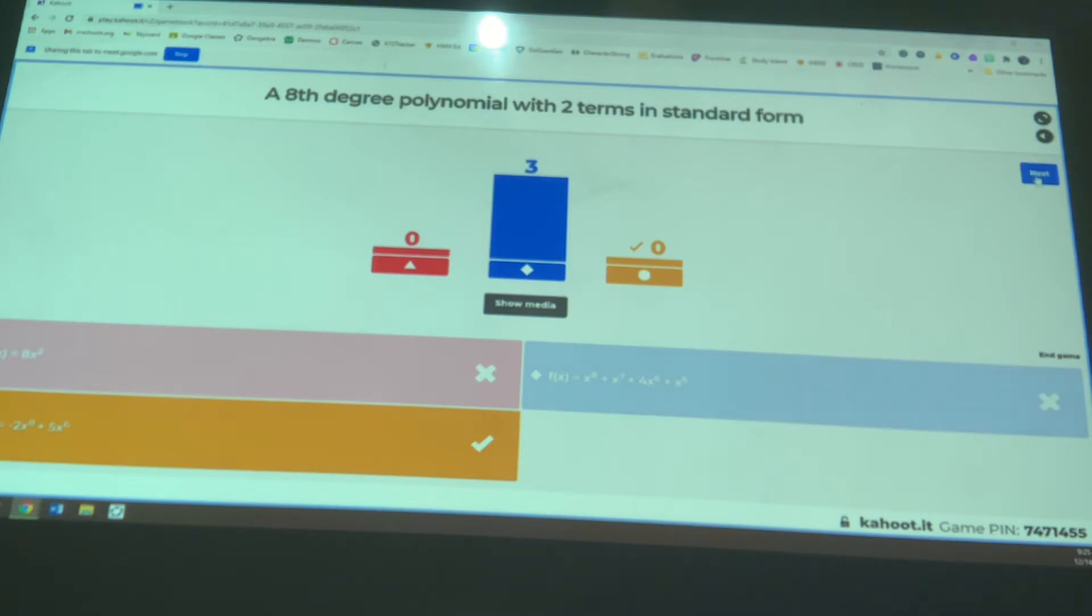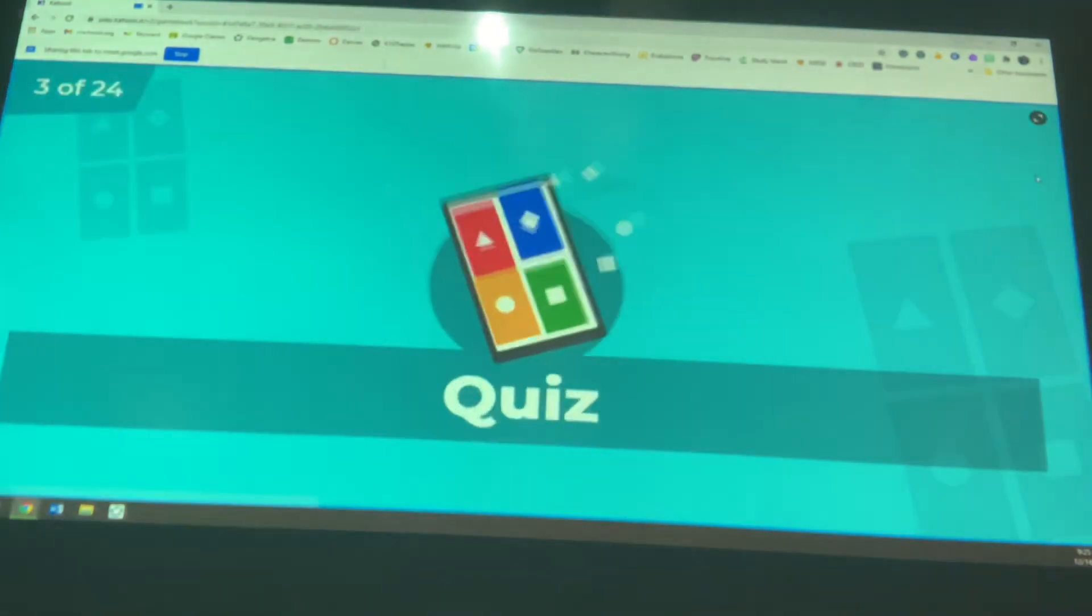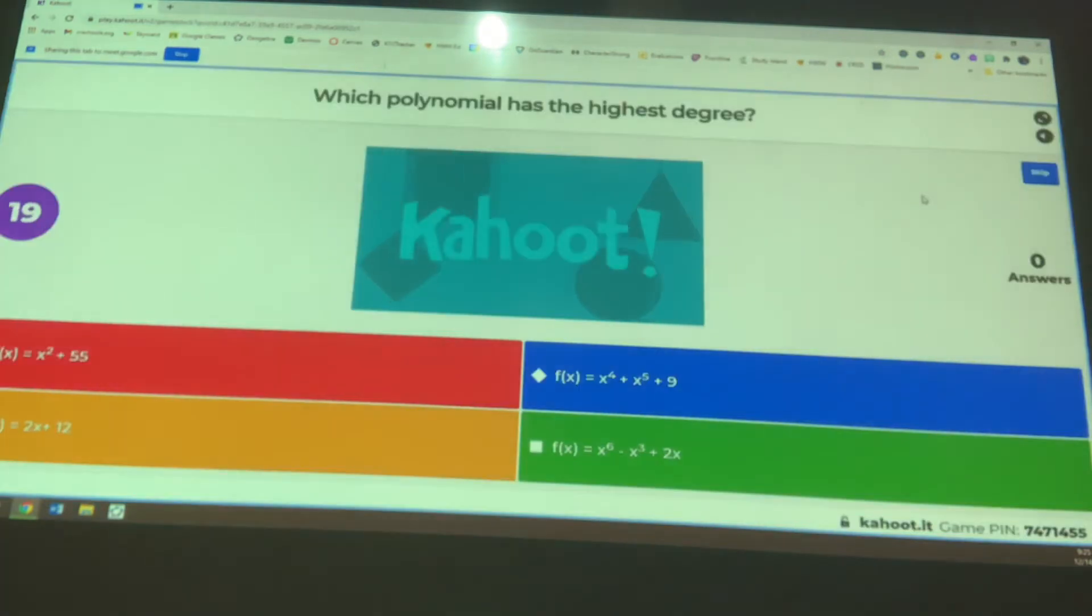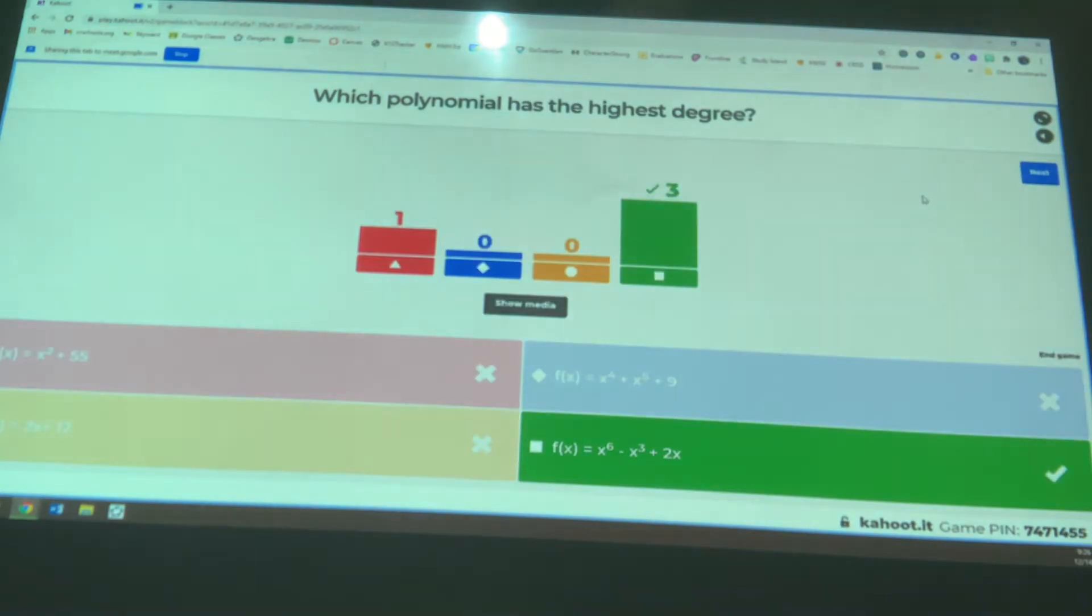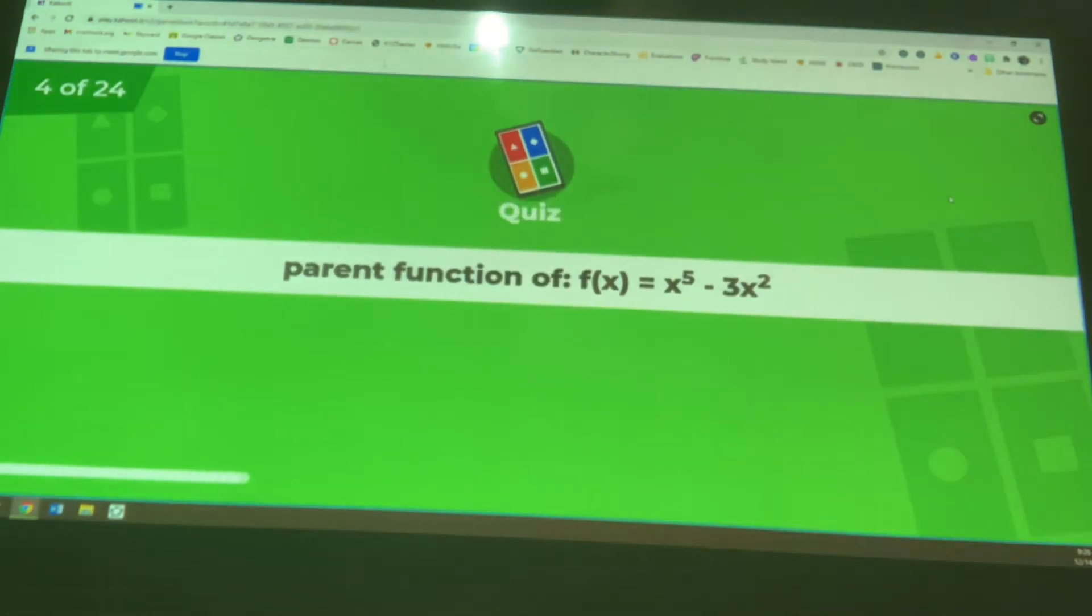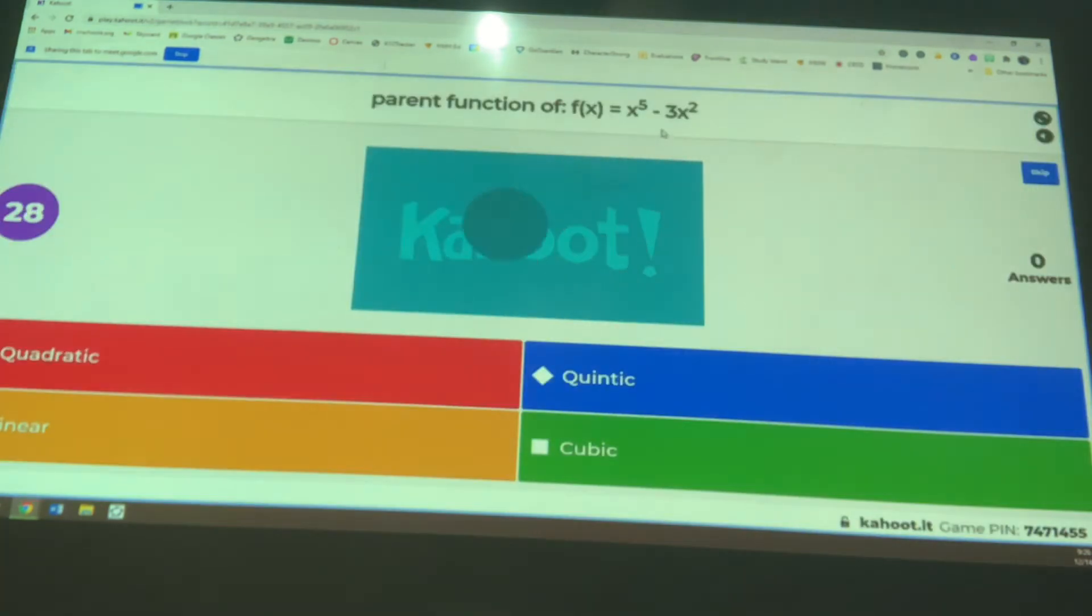Okay. If you have questions, let me know. Which polynomial has the highest degree? Yep, just look at those exponents. Alright. Again, welcome if you just joined us. You can play along in the chat. You can join using the game pin at the bottom there. Alright, highest degree. Just look at your exponents. This is a sixth degree polynomial. Once we get over degrees of four or five, right, we just call them sixth degree or seventh degree polynomial.